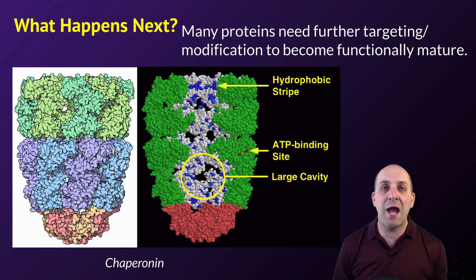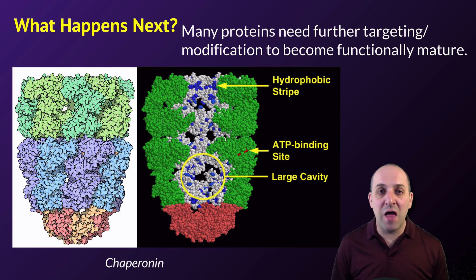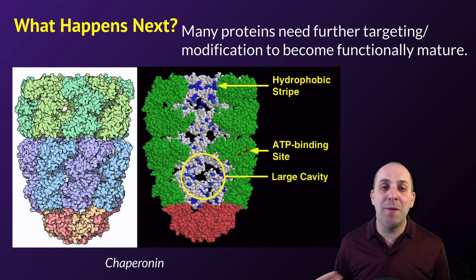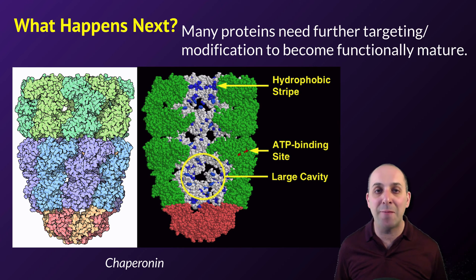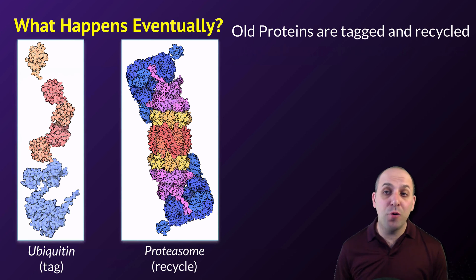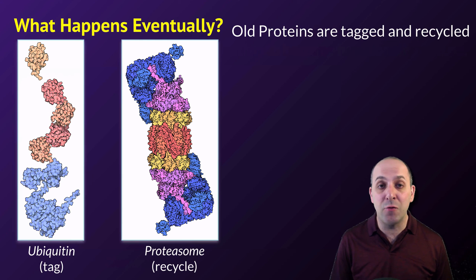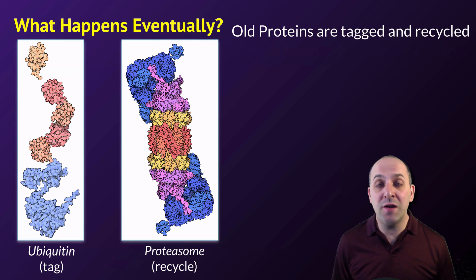So what happens next to the protein? Well, it turns out that many proteins are able to form into their native conformations just as a function of being produced, but there are many more that aren't. So a lot of proteins are going to need further modifications in order to actually become their functionally mature form. One way this is accomplished is through the action of what are called chaperonin proteins — these proteins have large cavities that newly made polypeptide chains can enter into, where conditions can be altered so that the polypeptide chain assembles into its functional conformation. Various organelles in the endomembrane system can also serve roles in the production of proteins, particularly the endoplasmic reticulum and the Golgi body. And of course, old proteins need to be broken down into amino acids so that those amino acids can be reused by the cell to produce new proteins. One way this is accomplished is through the action of the protein ubiquitin, which attaches itself to old proteins and signals to structures like proteasomes inside of the cell that the protein needs to be broken down. Ubiquitin-tagged proteins will enter into the proteasome where hydrolytic enzymes will break them apart into their constituent amino acids.